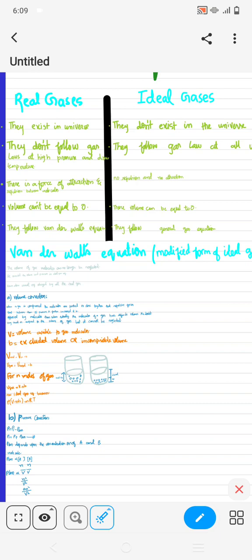So real gas means the gas that actually exists in this universe, and ideal gas that do not exist in the universe. It's like an imaginary gas that is applicable for few conditions. We'll study that as well.